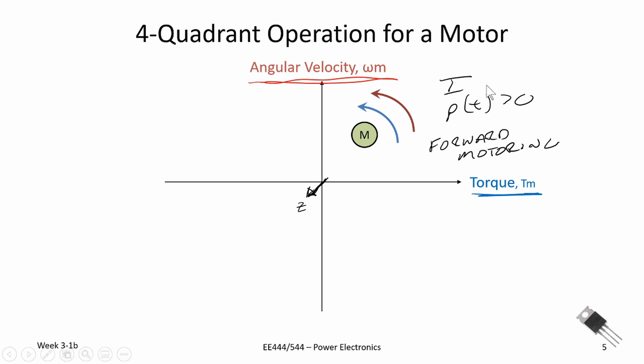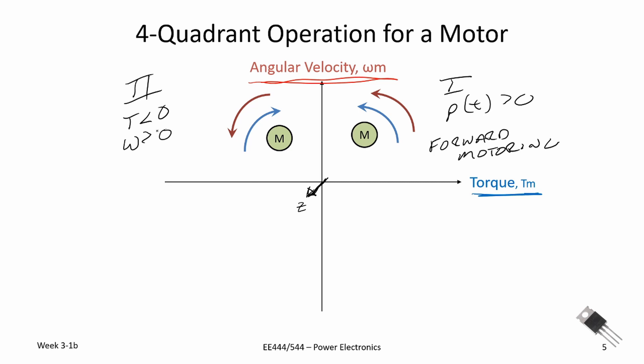Now let's go over to quadrant two. In quadrant two our torque is less than zero — it's reversed — however our angular velocity is greater than zero. The product of those two is going to be less than zero, so the motor is providing electrical energy back. Oftentimes if we can't do regenerative braking, we have to absorb this energy in the form of heat through a resistance of some type. This quadrant is called forward braking.